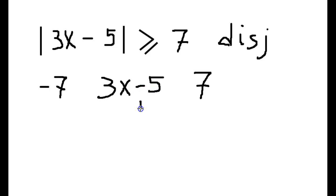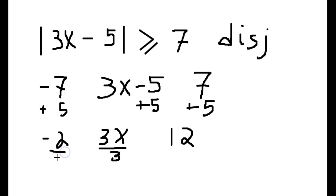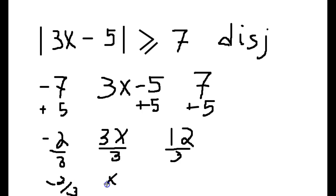We add 5 to everything just like before — in the middle, on the far left, and on the far right. On the far left we get negative 2, in the middle we get 3x, and on the far right we get 12. Then we divide everything by 3. On the far left the result is negative 2 thirds, in the middle we get x, and on the far right we get 4.